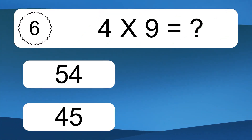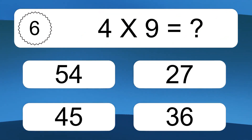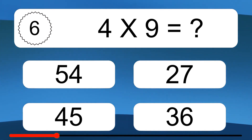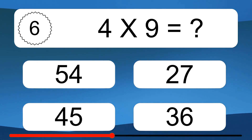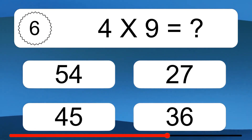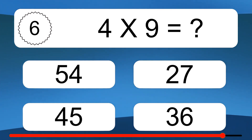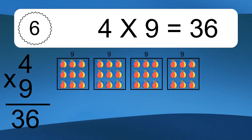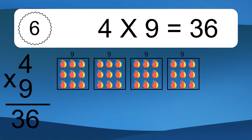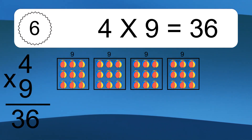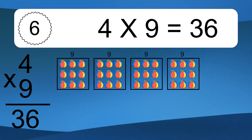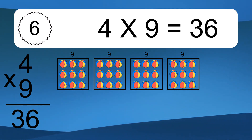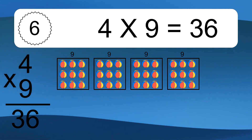Four times nine equals what? Four times nine equals thirty-six. We have four boxes, and each box has nine colorful balls inside. If you count all the balls in all the boxes together, you will have four times nine balls. This equals thirty-six balls.